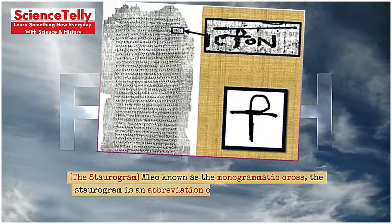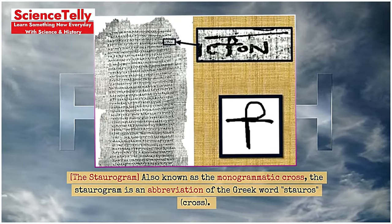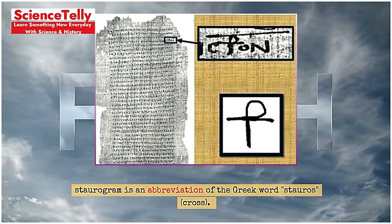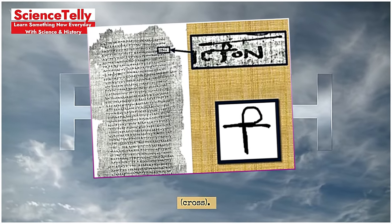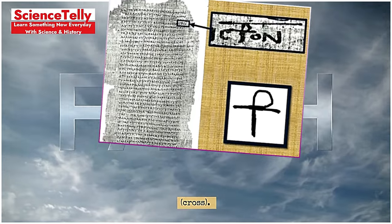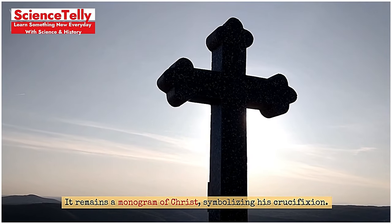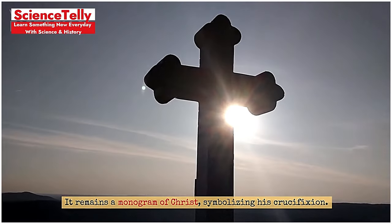The Staurogram, also known as the monogrammatic cross, is an abbreviation of the Greek word 'Stauros,' meaning cross. It remains a monogram of Christ, symbolizing his crucifixion.